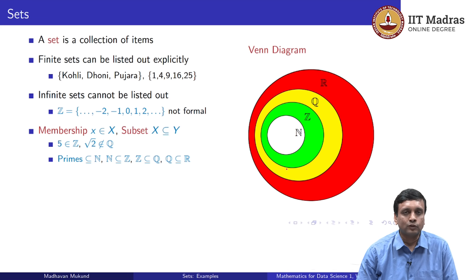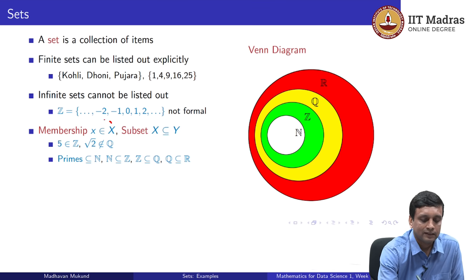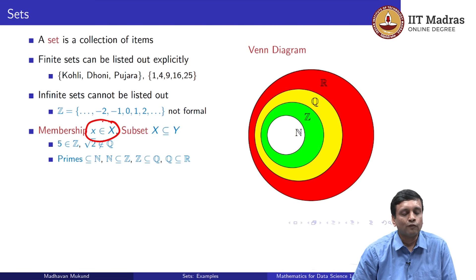But before that, let us talk about the two basic relationships between sets and membership of a set. Membership is denoted by the element-of relation. A small x typically denotes a member or an element of a set, and capital X usually denotes the set itself. So when we write small x belongs to capital X, we mean the element x belongs to X. For example, the number 5 belongs to the set of integers, and the square root of 2 does not belong to the set of rationals.